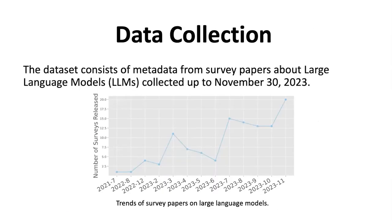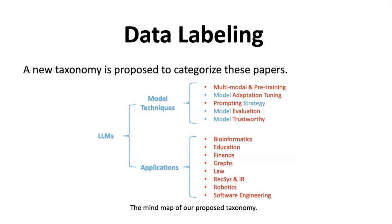The dataset contains metadata from survey papers about large language models collected up to November 30, 2023. We present the trend of these papers, noting that we only highlight the first release date. We labeled each paper to a different category. Note that the comprehensive and others categories are not shown here, so the total number of categories should be 15.